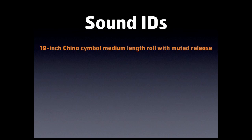One of the main components of SoundWorld is the Sound ID. Essentially, a Sound ID is just a structured name that describes a sound. Let's take a look at just one specific sound from the Virtual Drumline library. The Sound ID we're going to look at here defines a 19-inch China cymbal crescendo roll of medium length that mutes upon release.